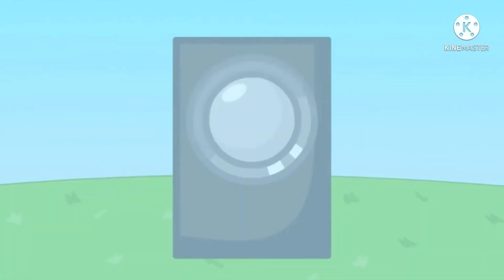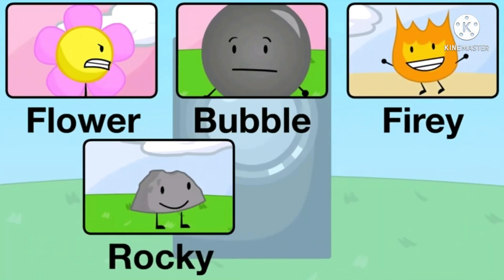This time the voting is between Flower, Bubble, Firey, Rocky, and Leafy. Voters, if you are watching this video, you should vote who you think should be eliminated. Vote right now.